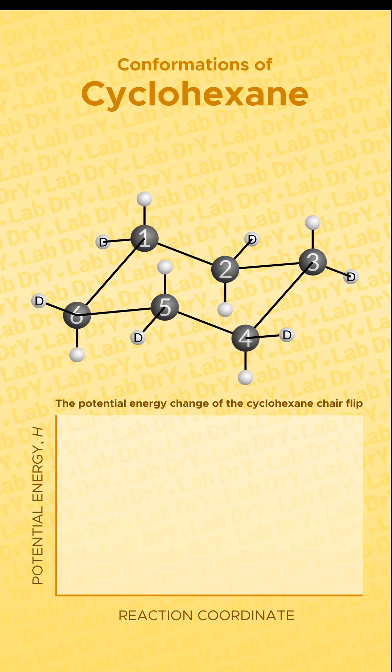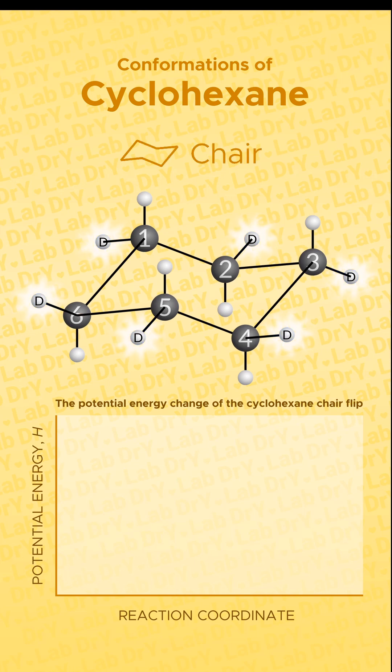In the cyclohexane ring, the carbon atoms are numbered in no particular order from 1 to 6. This chair conformation of cyclohexane has hydrogen atoms in the equatorial positions, labeled as deuterium (d). The hydrogen atoms in the axial positions are regular hydrogens.